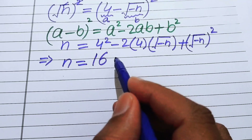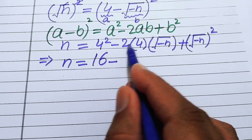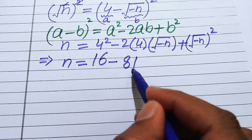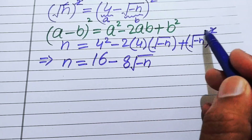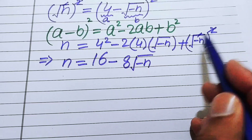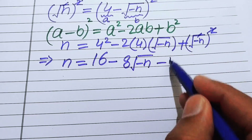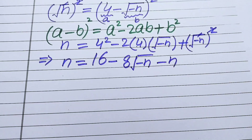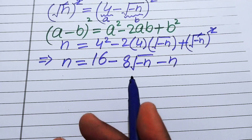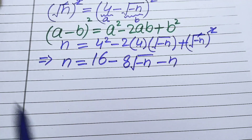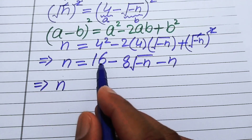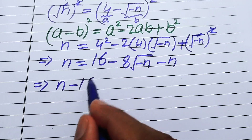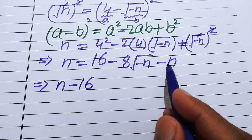In the next step: 4 squared equals 16, and 2 times 4 is 8, so we have n equals 16 minus 8√(−n) plus (−n). We now move all terms other than the radical to the left hand side: the +16 becomes −16 and the −n becomes +n.